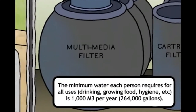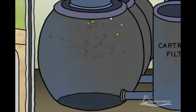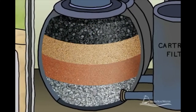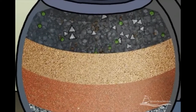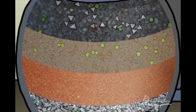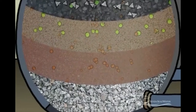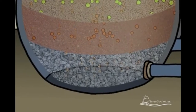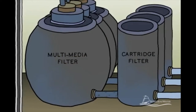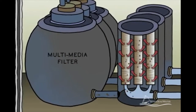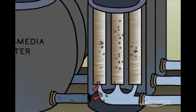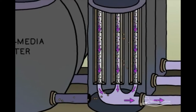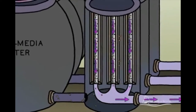Reverse osmosis is when the opposite occurs: by pressurizing the concentrated seawater, water molecules are forced through the membrane to the fresh water side. To protect the membranes from clogging, seawater is pre-filtered through multimedia filters — tanks containing layered granular materials such as anthracite, garnet, sand, pebbles, and gravel — which remove sand, twigs, seaweed, and other particles. Alternatively, ultrafiltration and microfiltration membranes are used. The filtered seawater then travels to cartridge filters made from a yarn-like synthetic material, which remove even smaller particles such as fine sand and clay before the seawater reaches the reverse osmosis membranes.